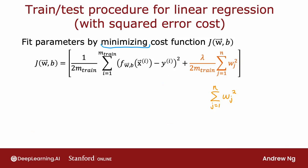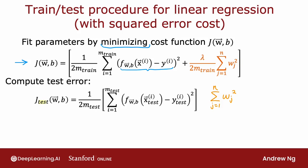So in order to train a model and evaluate it, this is what it would look like if you're using linear regression with a squared error cost. Start off by fitting the parameters by minimizing the cost function j of wb. So this is the usual cost function. Minimize over wb of this squared error cost plus regularization term, lambda over 2m times sum of the wj squared. And then to tell how well this model is doing, you would compute j test of wb, which is equal to the average error on the test set.